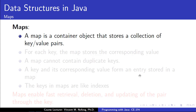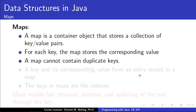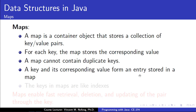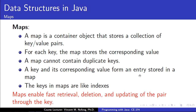A map is basically a container that stores collections of objects in key-value pairs. For each key that the map stores, its corresponding value is likewise stored. These keys cannot be duplicated in the map — each key is unique, though the values could be duplicated. When we have a key and its corresponding value stored in a map, they are referred to as an entry. The keys in the maps are more like indexes and they enable fast retrieval.